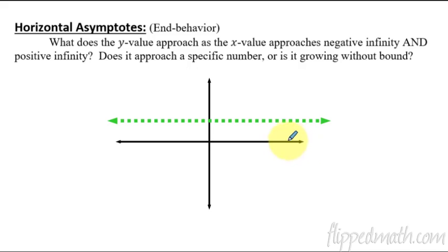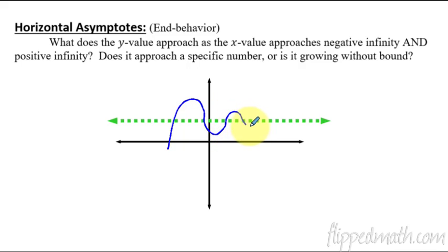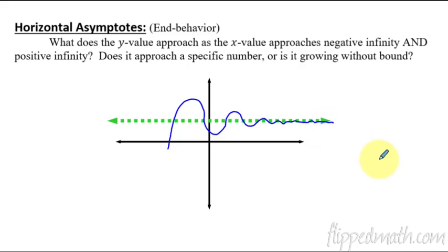Now, unlike vertical asymptotes, a graph might cross a horizontal asymptote — it's okay if a graph crosses it. So this is an example of something that would be getting smaller and smaller, and as you go across, it might cross an infinite number of times, but eventually the y value gets closer and closer to this horizontal asymptote.